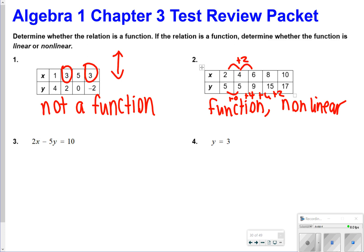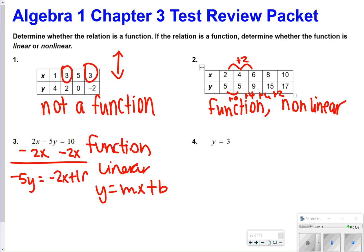Down here for number 3, this could be a function, and it will actually be linear, because you can actually rewrite this one as y is equal to mx plus b. So let me show you how that works. We would just subtract 2x from each side, so we get -5y equals -2x plus 10, and then divide everything by negative 5, and you get y is equal to 2 fifths x minus 2, so that would be a linear function.